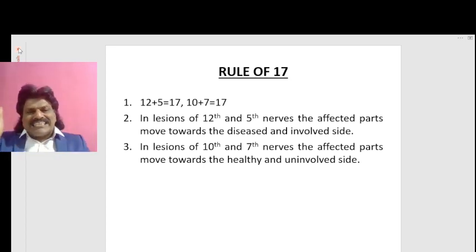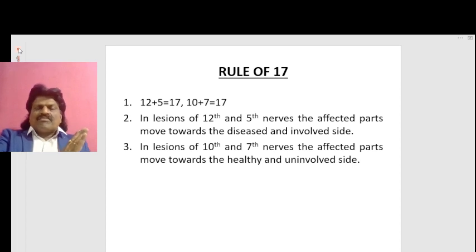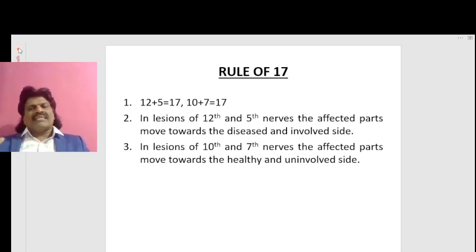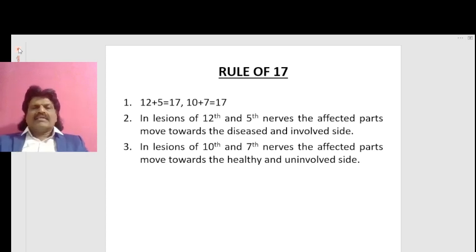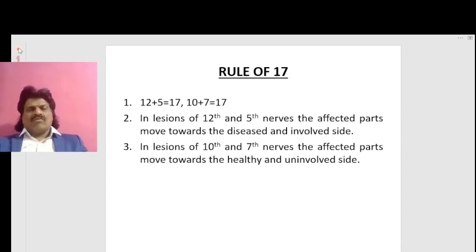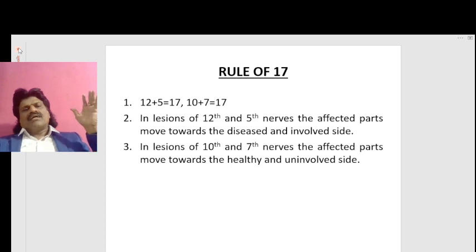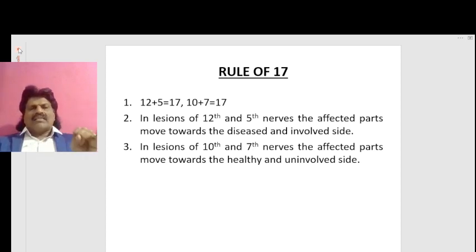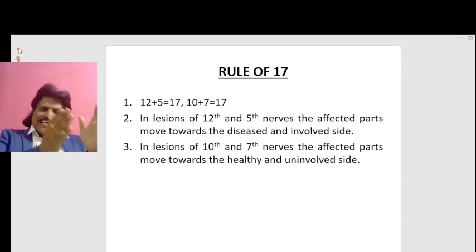Similarly, the 5th nerve — the trigeminal nerve — pushes the pterygoid to the opposite side. So if the 5th nerve is affected, the pterygoid or jaw moves towards the same, diseased side. If the 10th nerve is affected, the palate moves towards the healthier side. Likewise, if the 7th nerve is affected, the angle of the mouth moves towards the healthier side. So in lesions of the 10th and 7th nerves, the affected parts move towards the healthy, uninvolved side.